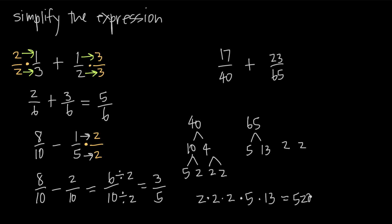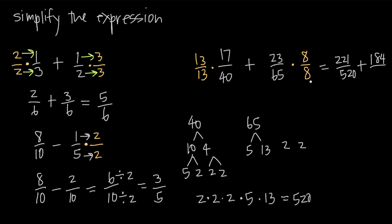Now if we take 520 and divide it by 40, we get 13. That means we have to multiply the first fraction by 13 over 13 in order to get 520 in the denominator — 13 times 40 is 520. If we take 520 and divide it by 65, we get 8. So we multiply the second fraction by 8 over 8, giving us 65 times 8 or 520 in the denominator. Now we have a common denominator of 520. We do our multiplication: 13 times 17 gives us 221, and 23 times 8 gives us 184. Now with this common denominator we just add the numerators together: 221 plus 184 is 405. So we get 405 over 520.